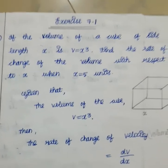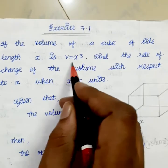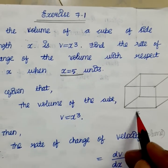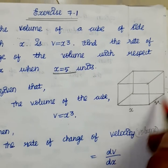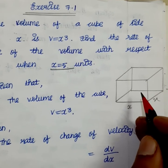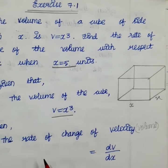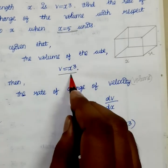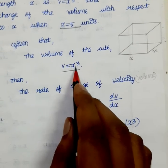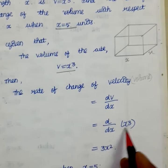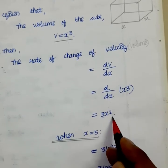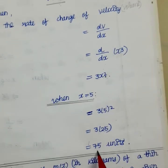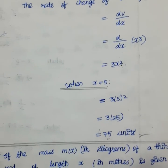Next, Example 7.1, fourth problem: if the volume of a cube with side length x is V = x³, find the rate of change of the volume with respect to x when x = 5 units. Differentiating: dV/dx = 3x². At x = 5: dV/dx = 3 × 25 = 75 units. So the rate of change of volume of the cube at x = 5 is 75 cubic units.